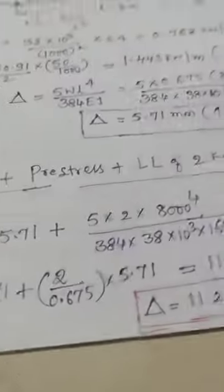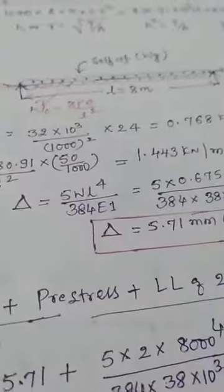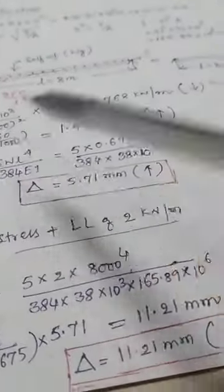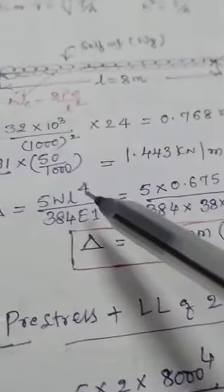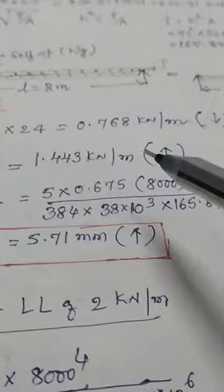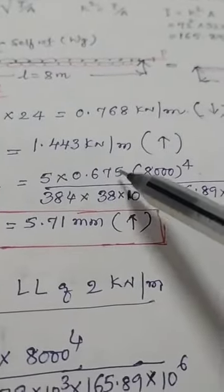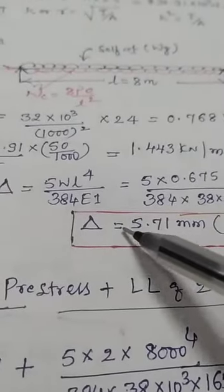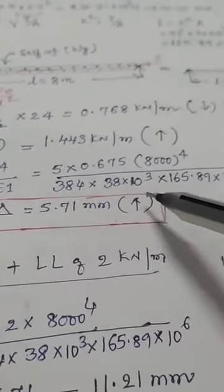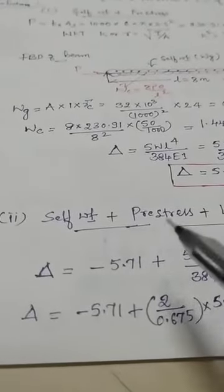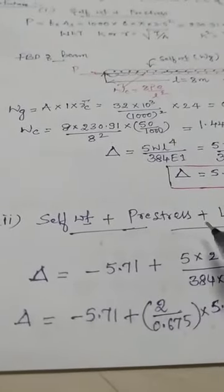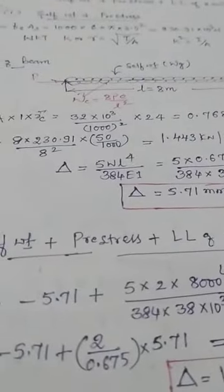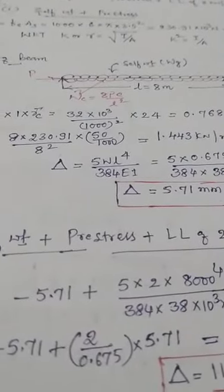With the net UDL of 0.675 kN/m upward, using 5WL⁴/(384EI) gives an upward deflection of 5.71 mm, denoted with an upward sign. This is the combined deflection due to self-weight and prestress.